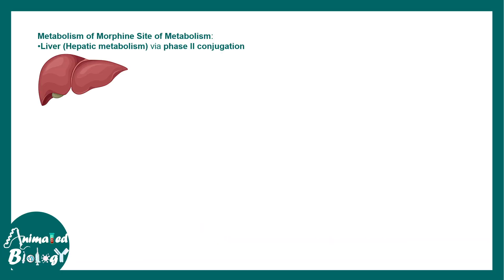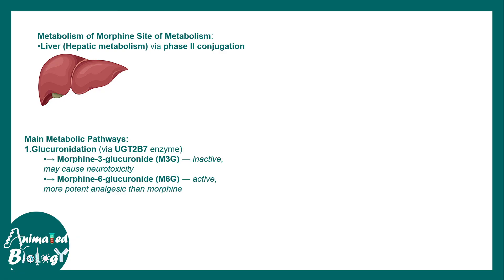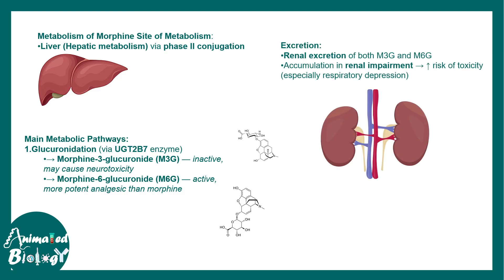Regarding metabolism, morphine is metabolized in the liver into two compounds: morphine-3-glucuronide (M3G), which is an inactive form associated with neurotoxicity, and morphine-6-glucuronide (M6G), which is an active and more potent analgesic form of morphine. Excretion occurs via the kidneys, with renal excretion of both M3G and M6G. However, accumulation of these metabolic intermediates can be quite risky and toxic for the body.